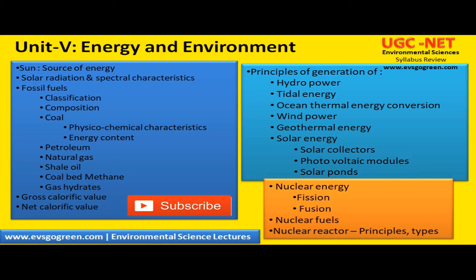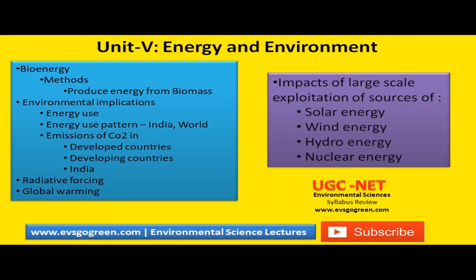Then you have to learn about nuclear energy, particularly fission and fusion, as well as nuclear fusion fuels, and the principles and types of nuclear reactors. These are the first three modules of unit 5. Next you have to learn about two more concepts, particularly bio energy — what are the different methods from which you can get bio energy and how can you produce energy from biomass.